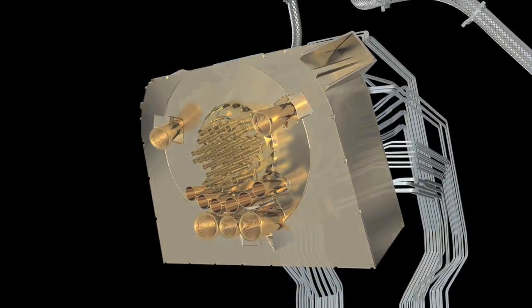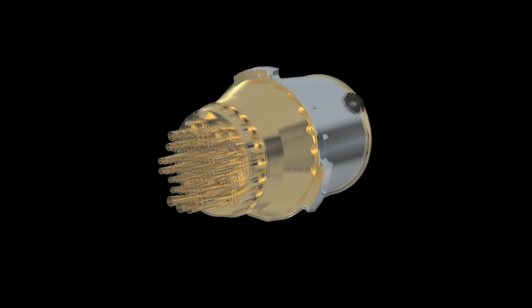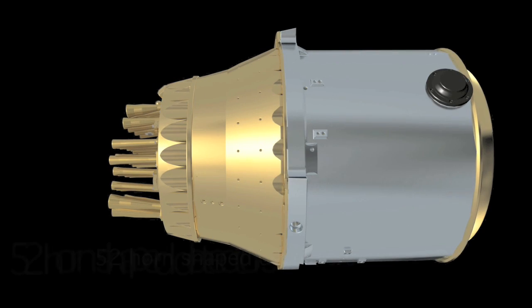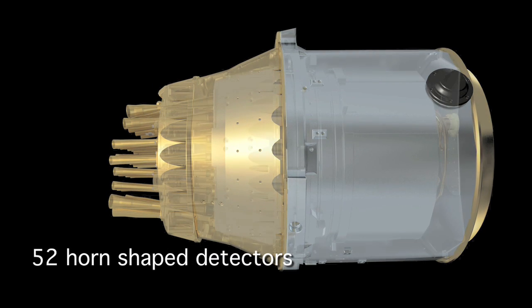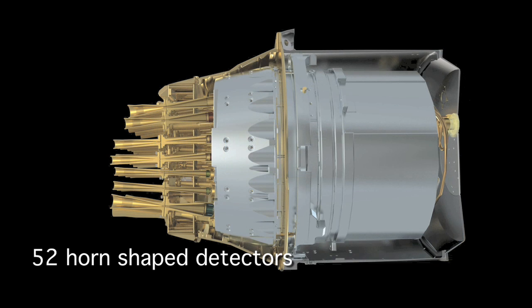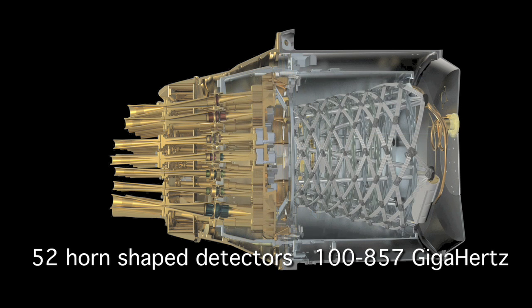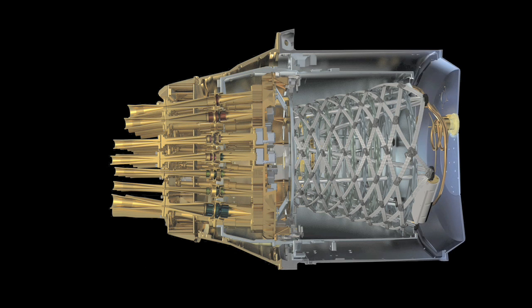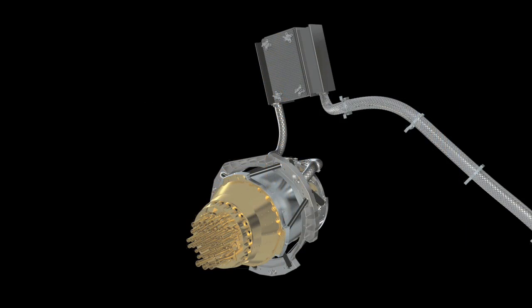The high-frequency instrument is an array of 52 bolometric horn-shaped detectors that convert radiation into heat. The detectors work in six frequency channels centered between 100 and 857 gigahertz. This state-of-the-art instrument is like no other currently operating in space.